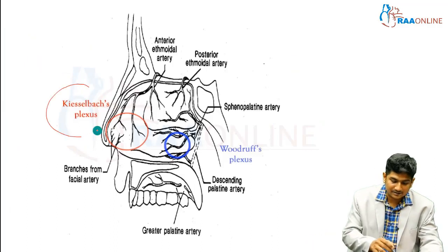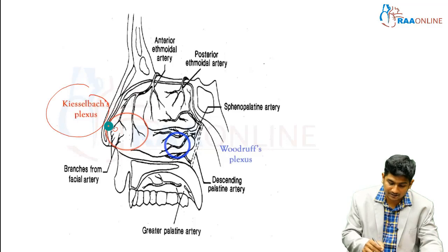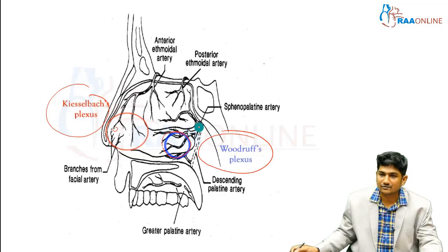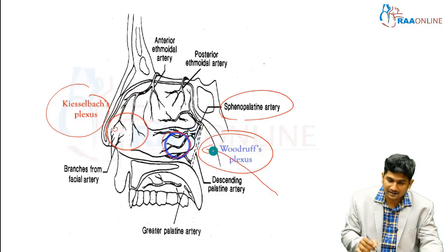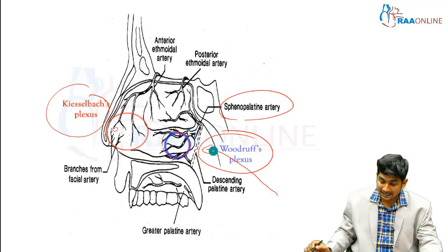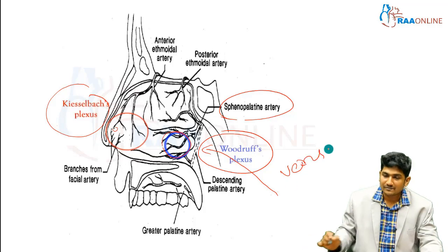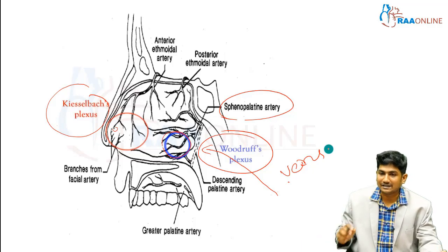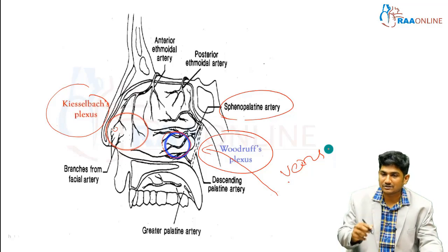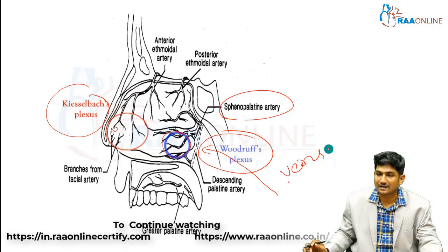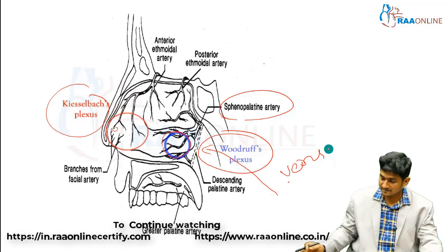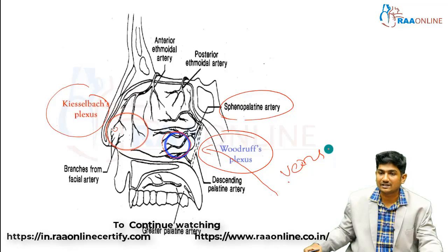The posterior epistaxis area is called Woodruff's plexus. Woodruff's plexus is formed by the sphenopalatine artery along with some pharyngeal plexuses and some venous system contributions. It is not clearly established whether it is completely arterial or venous — it has derivatives from both systems. The major artery feeding Woodruff's plexus is the sphenopalatine artery and the ascending pharyngeal branches, making this the most common site of posterior bleeding.